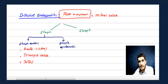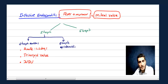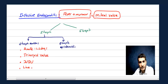Staph aureus is primarily associated with mitral valve since mitral is the most common valve affected. But uniquely, tricuspid valve can also be affected, associated with IV drug abusers or line infections — like central venous line infections.